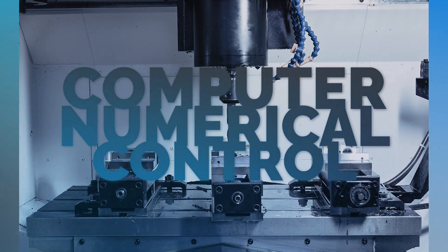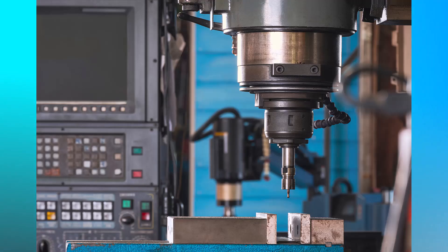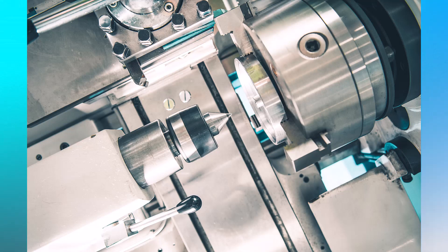The spindle of a CNC machine, which holds and rotates the tool, is crucial for all machining operations, from cutting and milling to drilling. Controlling the direction and the halt of the spindle rotation is key to efficient and precise machining.